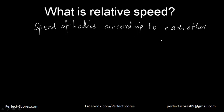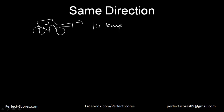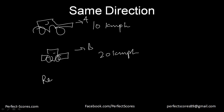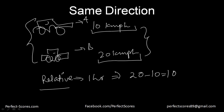There are two types of relative speeds. The first type is when the bodies are travelling in the same direction. Let's suppose this is car A travelling at the speed of 10 km per hour, and this is car B travelling at 20 km per hour. The relative speed is the actual distance covered between these two cars in one hour. Car B covers 20 km per hour and car A covers 10 km per hour.